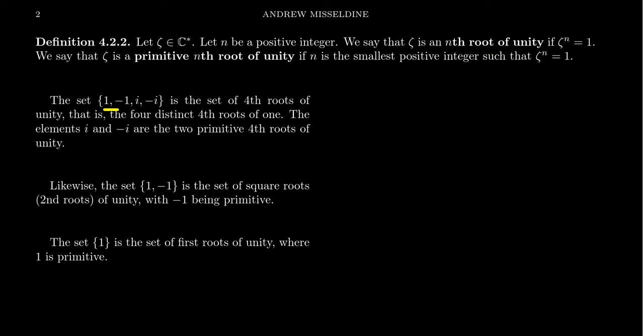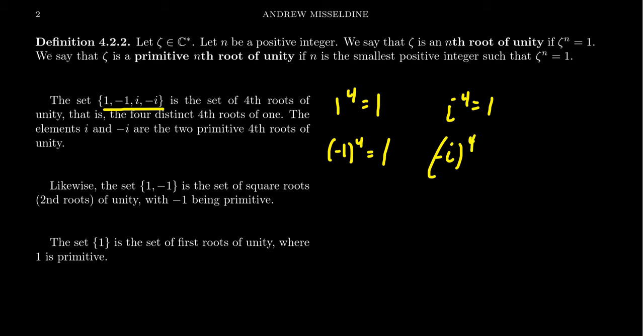We have previously seen that the numbers 1, negative 1, i, and negative i are fourth roots of unity. Notice that 1 to the fourth is equal to 1. Negative 1 to the fourth equals 1 because negative 1 squared is 1, and squaring 1 gives 1. We've also seen that i to the fourth is equal to 1. Likewise, negative i to the fourth equals negative 1 to the fourth times i to the fourth, which is 1 times 1, which is 1.